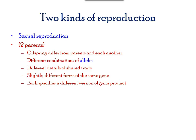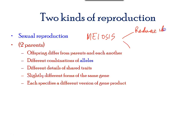The cell division that produces sex cells, such as a sperm cell and egg cell, is called meiosis. Meiosis results in reducing the chromosome number in the sex cells, and secondly, producing variations in the populations.